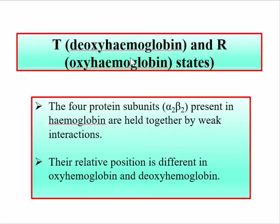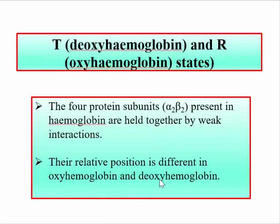Like myoglobin, hemoglobin exists in two states: deoxyhemoglobin (T state) and oxyhemoglobin (R state). The four protein subunits in hemoglobin are held by weak interactions, and their relative positions differ in oxyhemoglobin versus deoxyhemoglobin. These different relative positions are the basis for the T and R states.